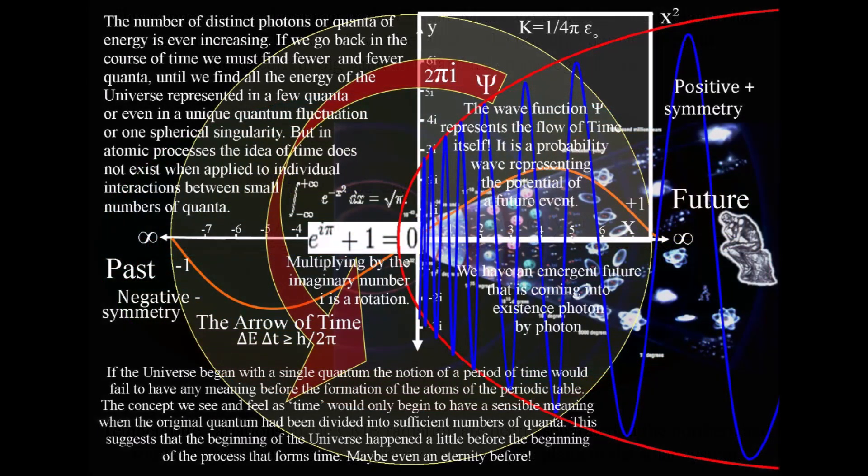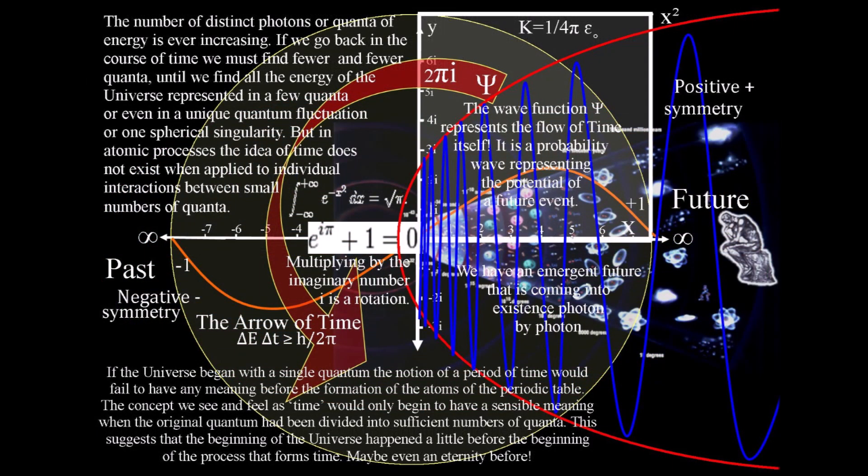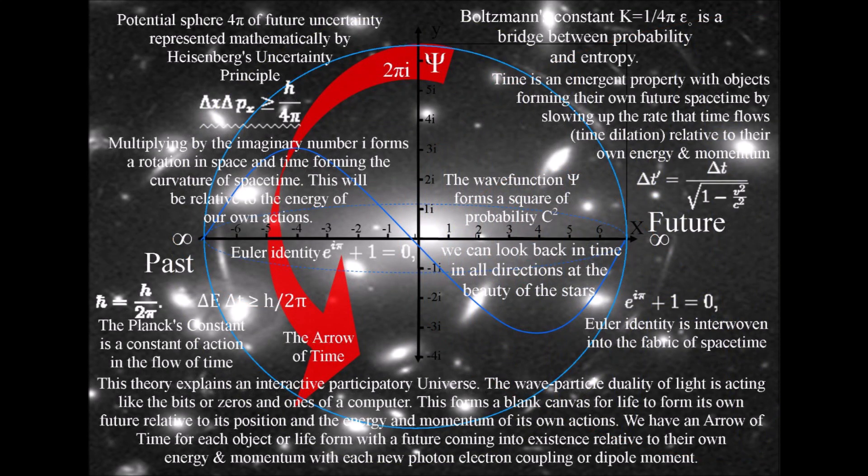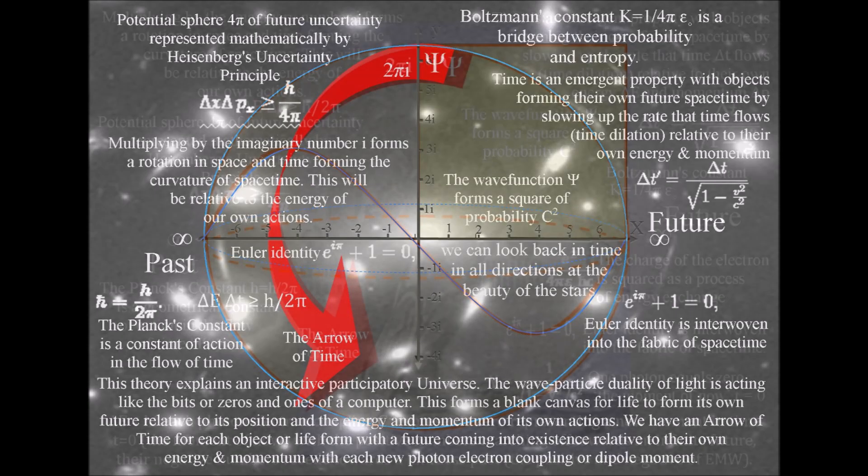I will explain how the Big Bang and the photons from the cosmic microwave background radiation can represent the beginning of our timeline, and how the cosmological arrow of time with the universe expanding from the Big Bang into the future is based on the same geometrical process that forms the concept of time that we have in our everyday life.